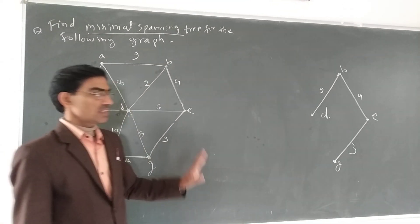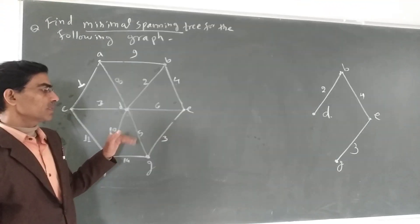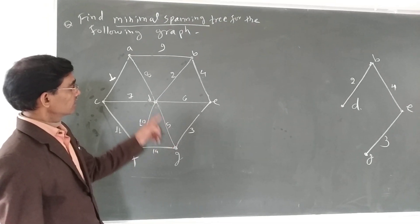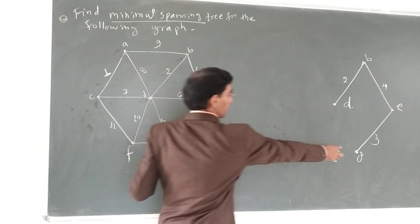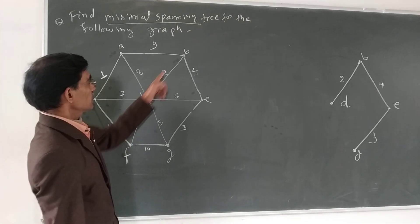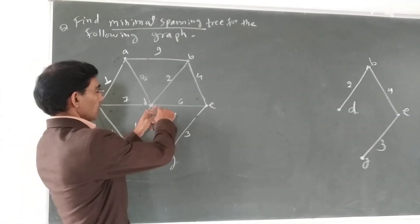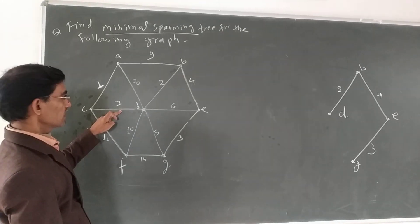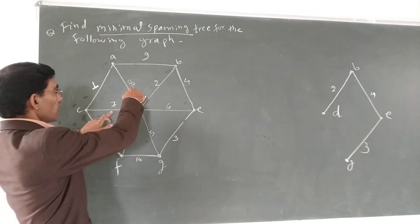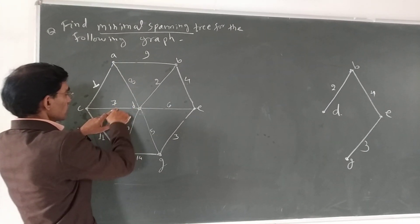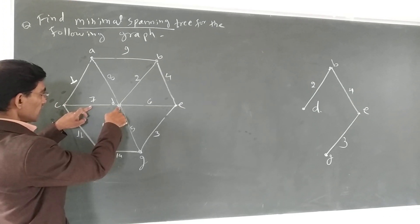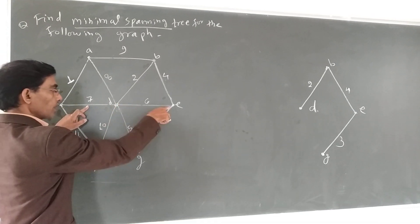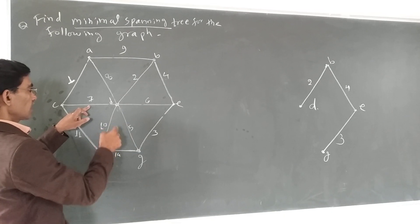अब 4 vertices हैं: D, B, E, G। इनसे जुड़े edges में से minimum चुनो। G के साथ 5 है लेकिन D से connect होगा तो circuit बनेगा — discard। D-E edge circuit बनाएगा — discard। 7 और 8 में minimum 7 है। F को include करने के लिए 7 available है, circuit नहीं बना रहा, तो हम इसे discard करते हैं। अंततः DC लेते हैं।